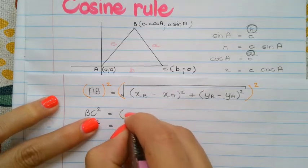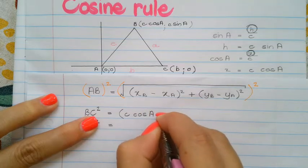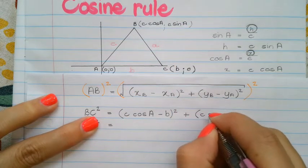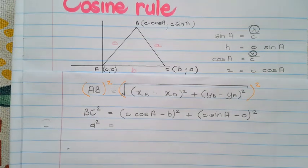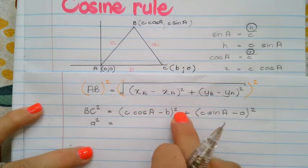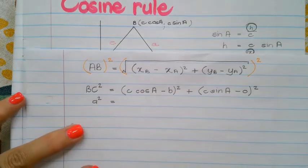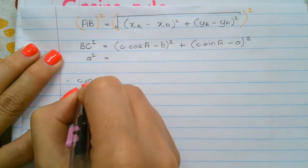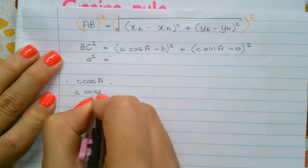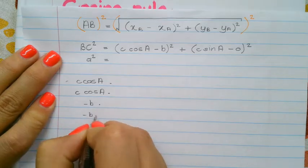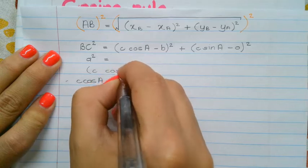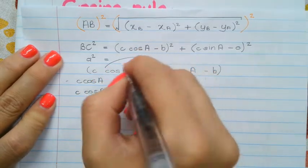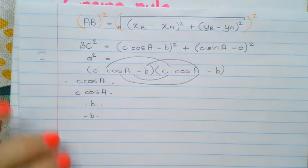So I will have c cos a minus b, everything squared, plus, and then the y coordinates, c sin a minus 0, everything squared. Now remember, if I have a bracket to the power of 2, I will need to foil this. I'm going to use a very old method that I used to teach grade 9s in order to do the foil. So c cos a, c cos a minus b times, minus b times. Remember, you double this up. So it's going to be c cos a minus b times c cos a minus b. So it's going to foil, so first, outer, inner, last. I'm not quite sure how you were taught this when you were in grade 9.